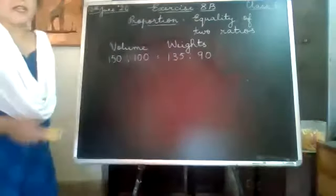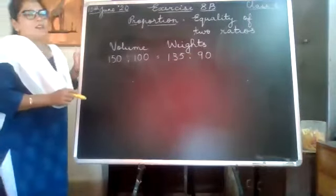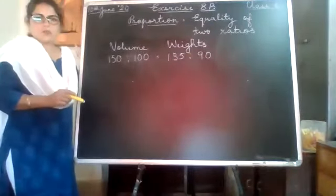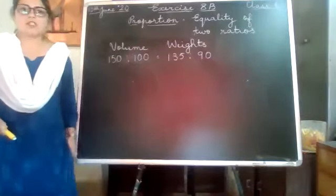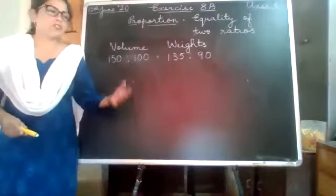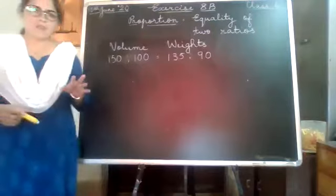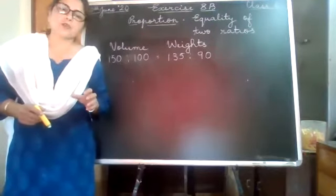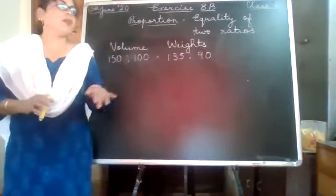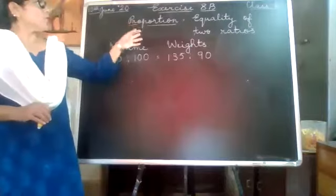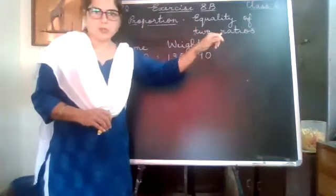We are going ahead with the ratio chapter — ratio and proportion. So what is proportion? Proportion is when we have a pair of ratios and they are equal. So proportion is equality of two ratios.